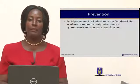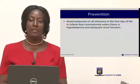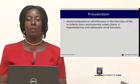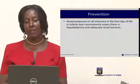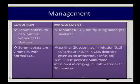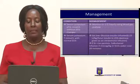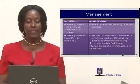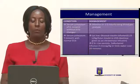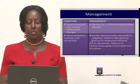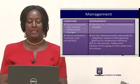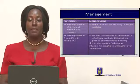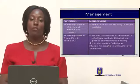For prevention, avoid potassium in all infusions in the first day of life for infants born premature, unless there is hypokalemia and adequate renal function. In management, for serum potassium of 6 mmol without ECG changes, monitor potassium every one to two hours using a blood gas analyzer. For serum potassium of 7 mmol with normal ECG, first-line treatment is glucose-insulin infusion. If potassium persists, salbutamol infusion of 4 micrograms in 5 mL of water is given over 20 minutes.